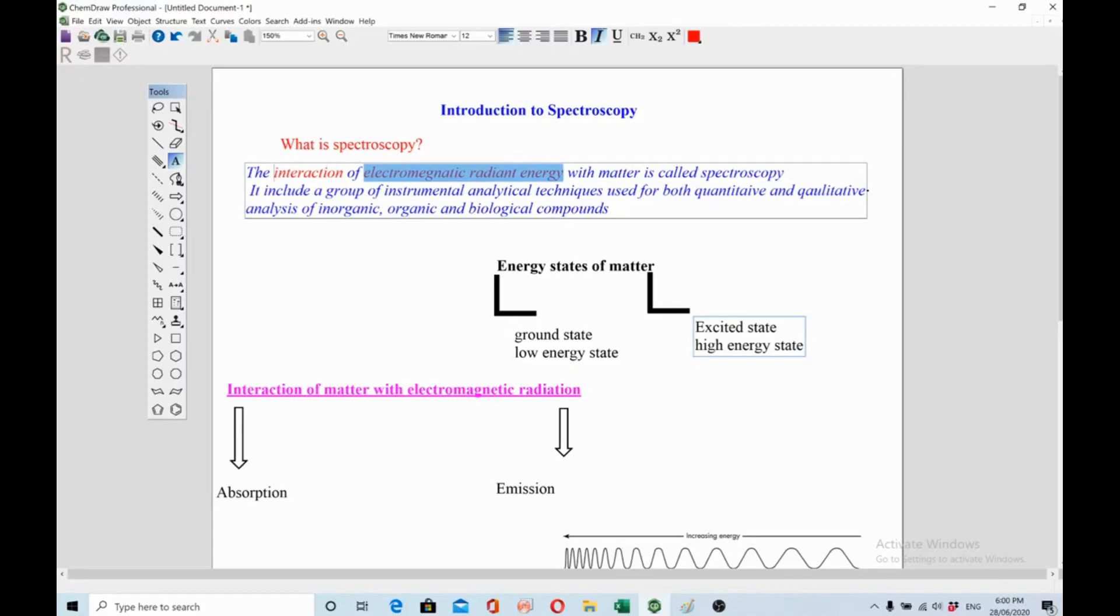Next question is how interaction of matter with electromagnetic radiation happens. There are basically two types in which interaction of matter is happening with electromagnetic radiation: one is absorption and another is emission.